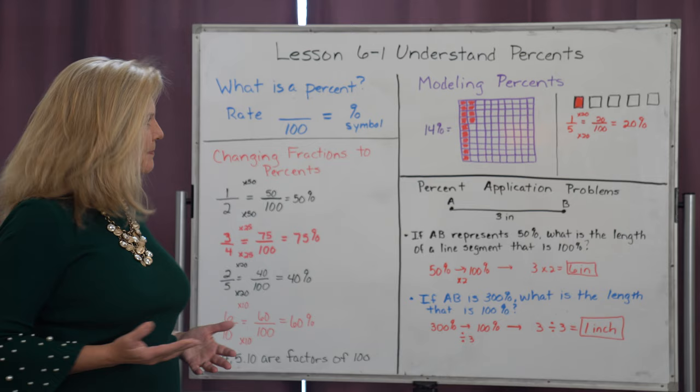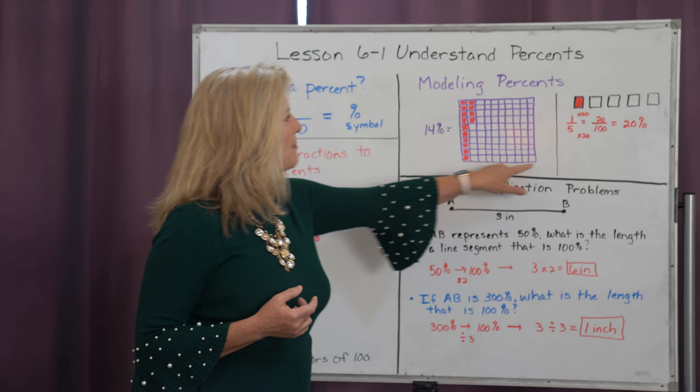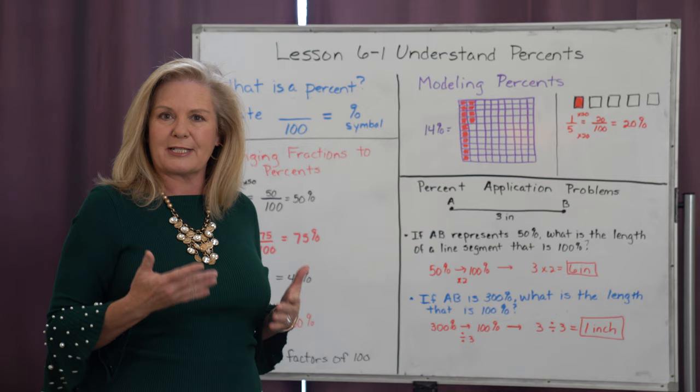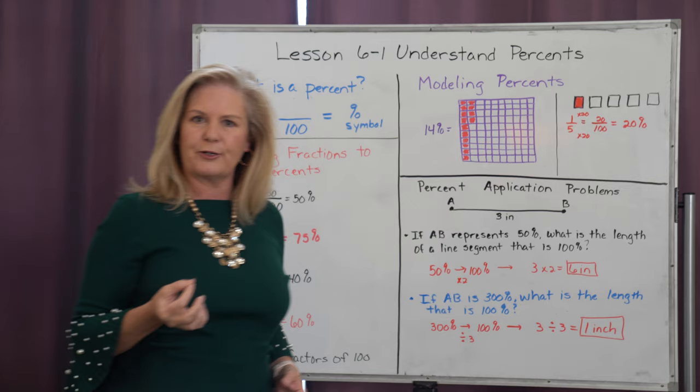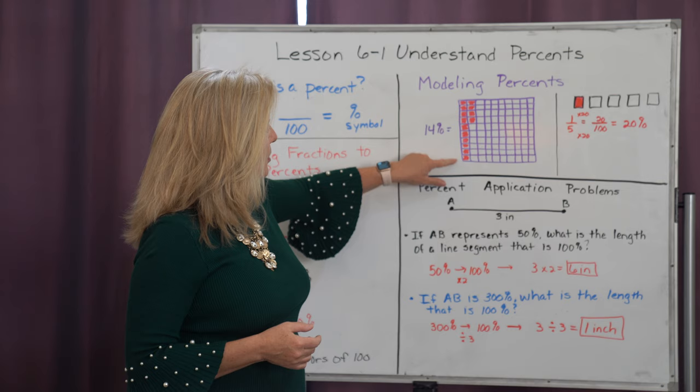Now we can also model percents fairly easily because we have a model that is a hundreds grid. And because a percent compares things to a hundred, all I have to do is count how many sections are colored in, and that would be compared to a hundred. So here I have fourteen out of the hundred colored, therefore that represents fourteen percent.